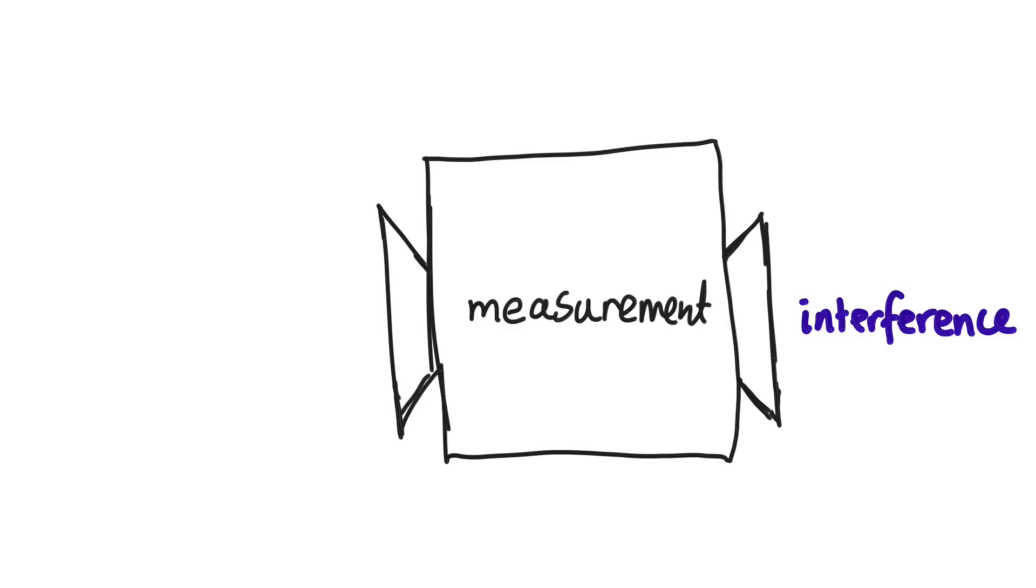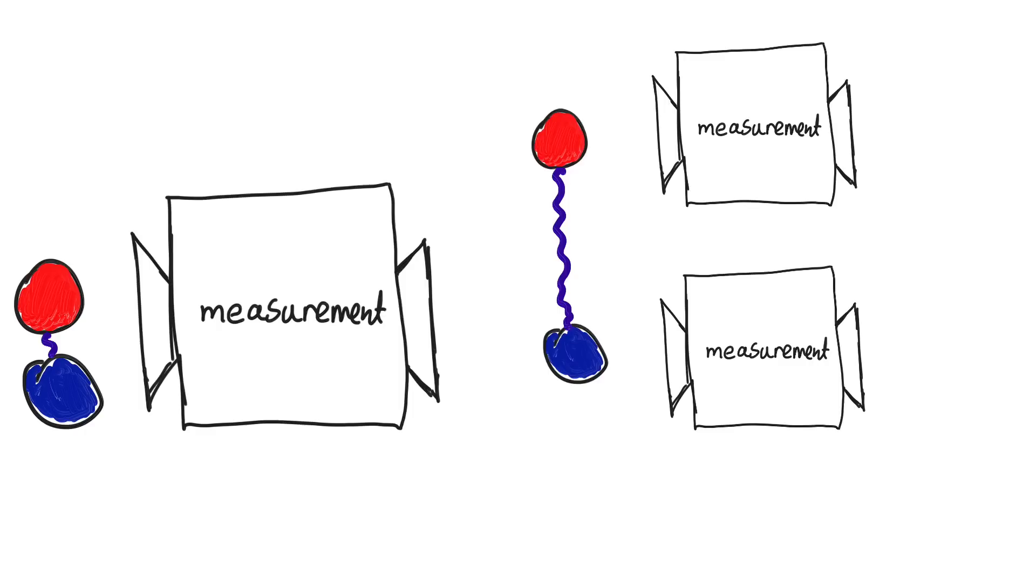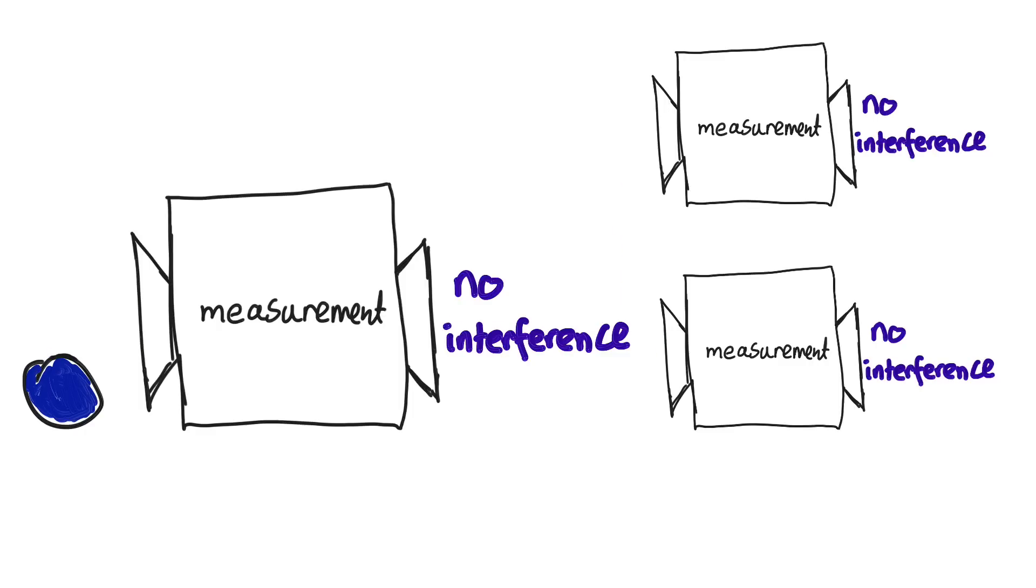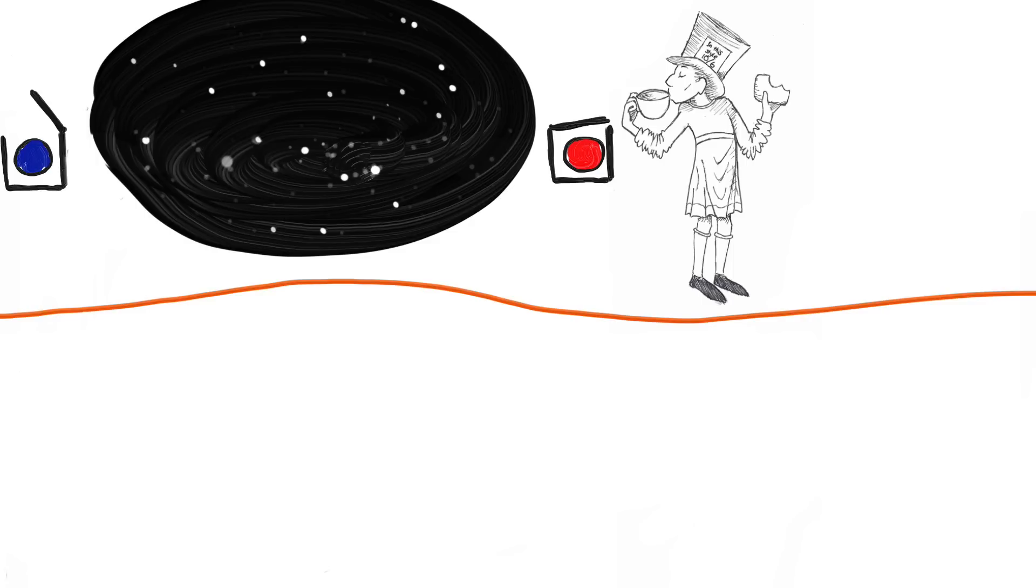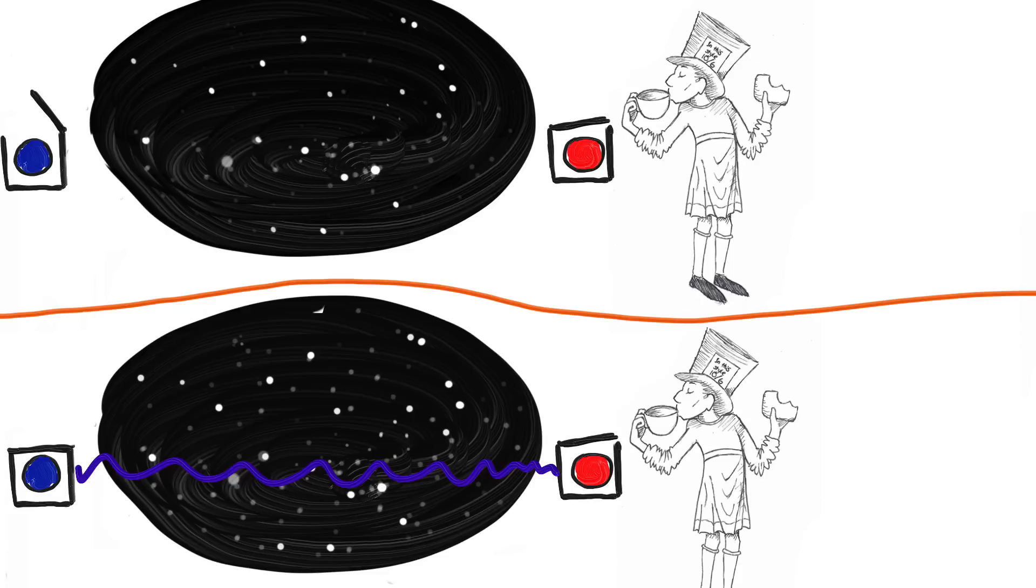If instead, you only do measurements on one of the particles, or even both of the particles but not together, there's no way for you to tell the difference between the state where they're in a superposition, or when they're not. To see this, let's look at what happens when Bob does his measurement in the case where Alice did hers already, or chose not to. In the case where Alice has measured, his particle really is up or down, but he doesn't know which.